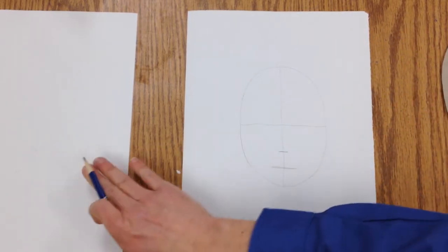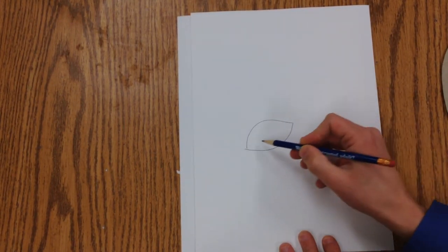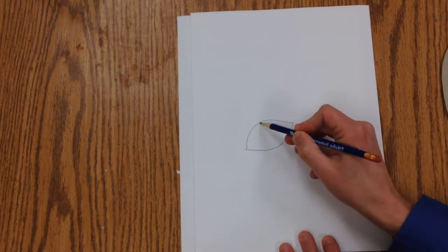Now, eyes are all different. You have some eyes that are like this, kind of arch and then swoop down at the bottom.